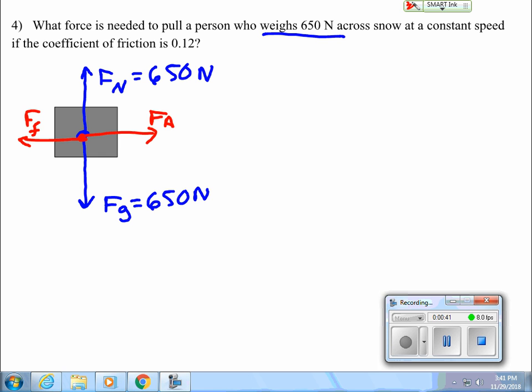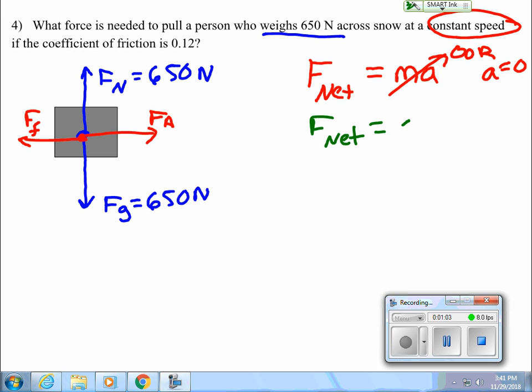Now the things I'm going to look for is I'm always going to start off with force net, which is basically the sum of all the forces acting on my object. And my object is either going to accelerate or A will be zero. And if A is zero, this whole problem goes to zero. So now I can say force net is equal to zero.